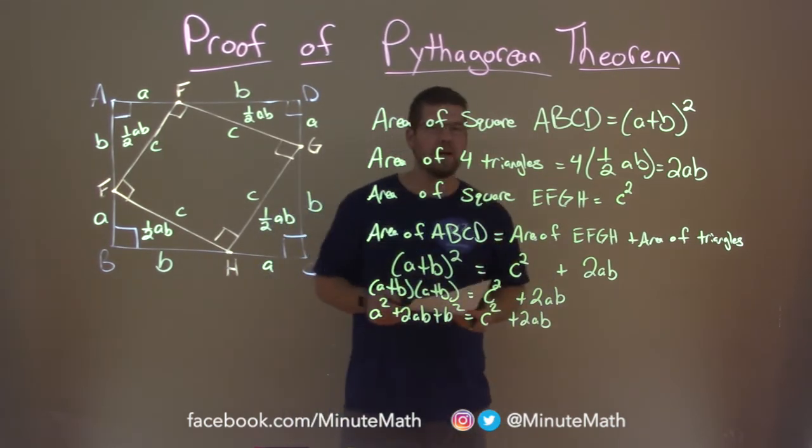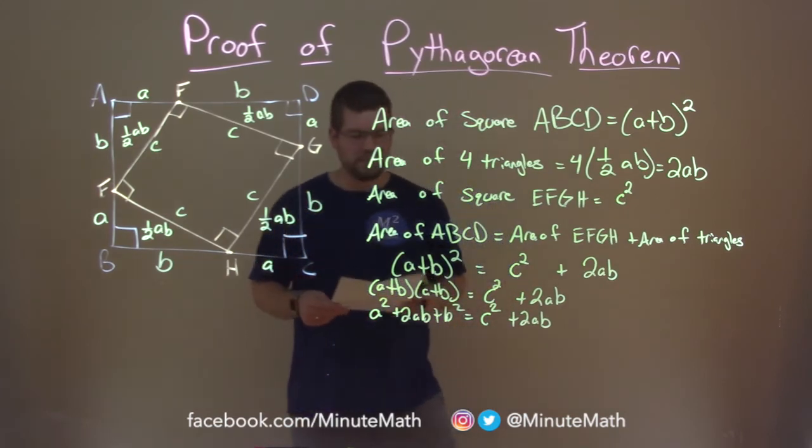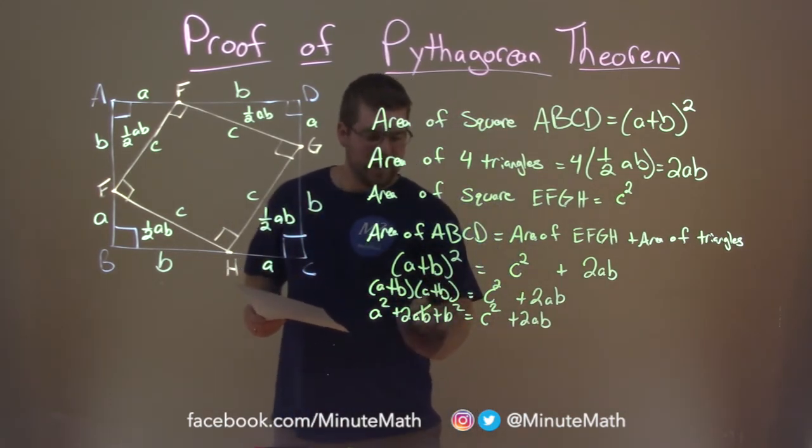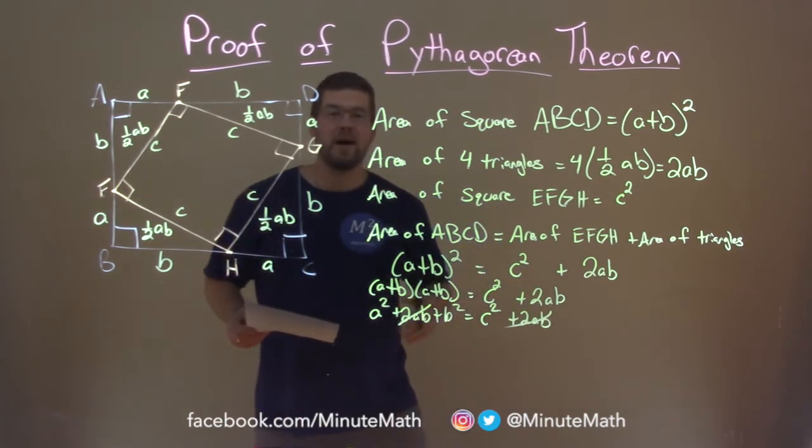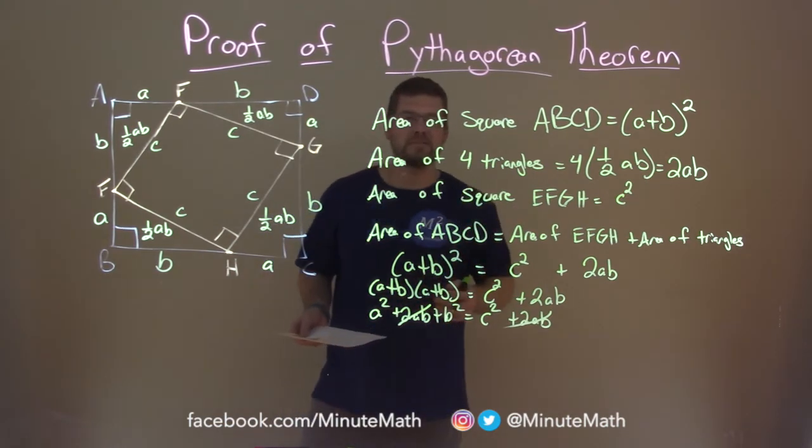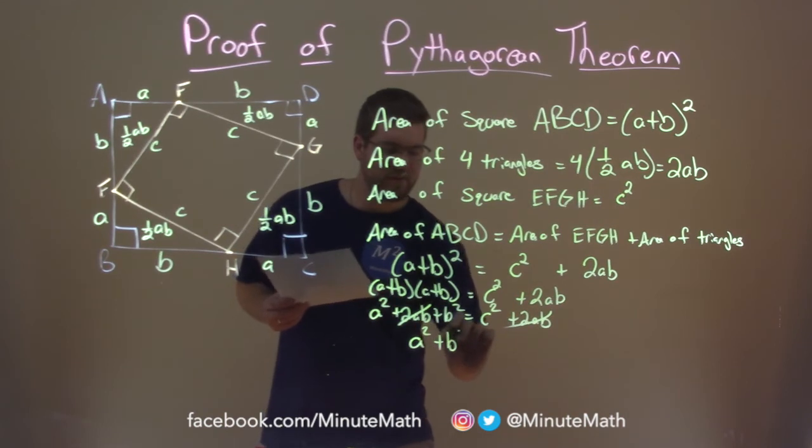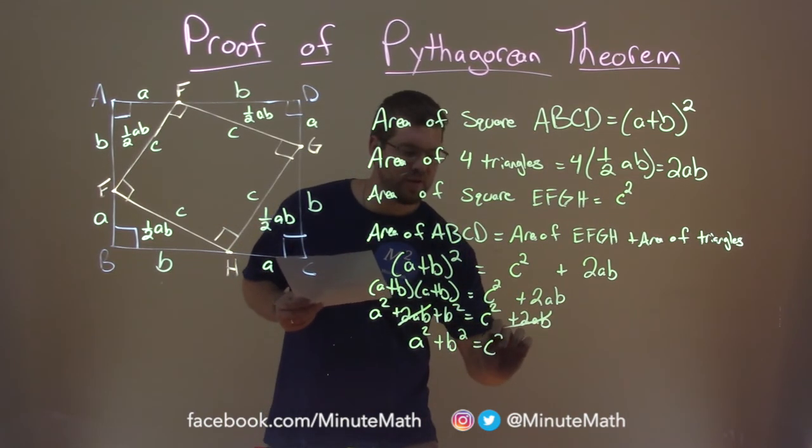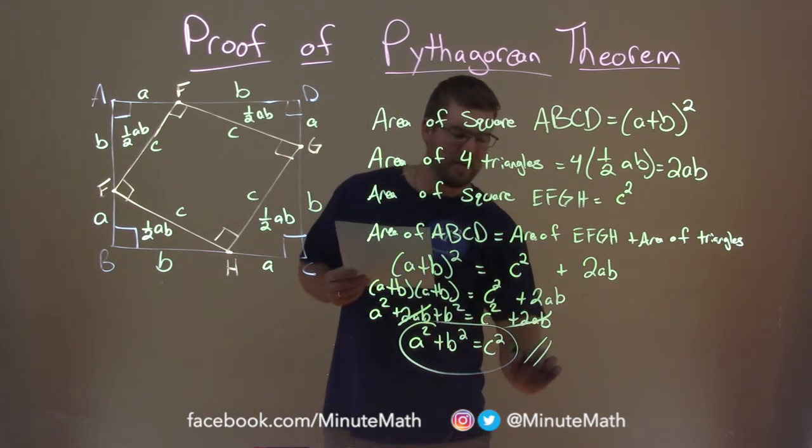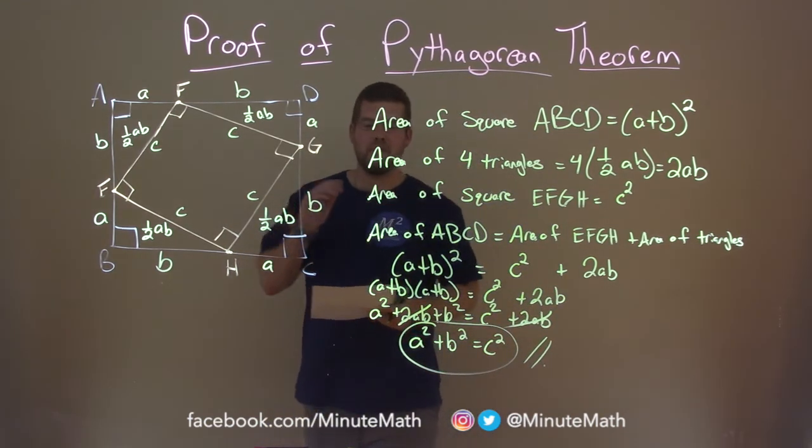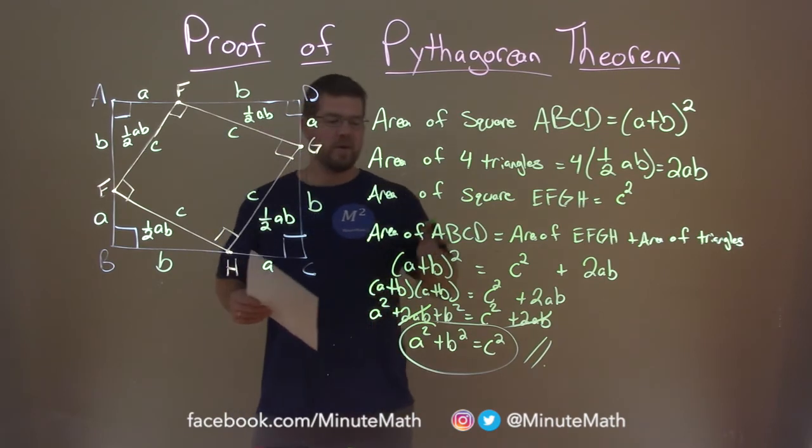And we're almost there. Can you see where we're going here? 2ABs cancel on both sides. And here we have our theorem. A squared plus B squared is equal to good old C squared. And now we have our Pythagorean theorem. A squared plus B squared equals C squared.